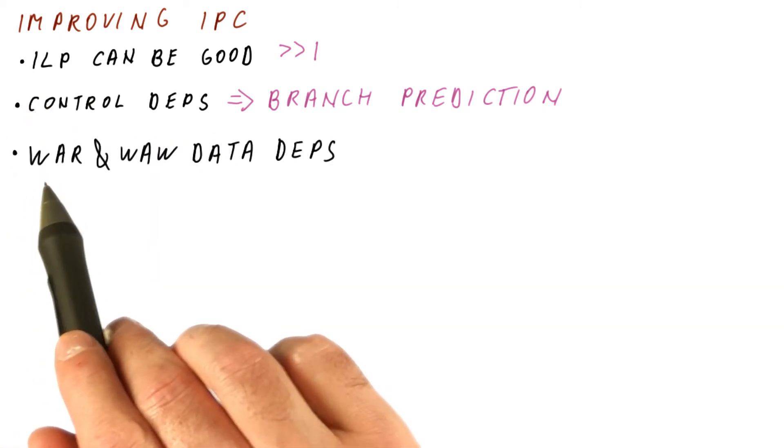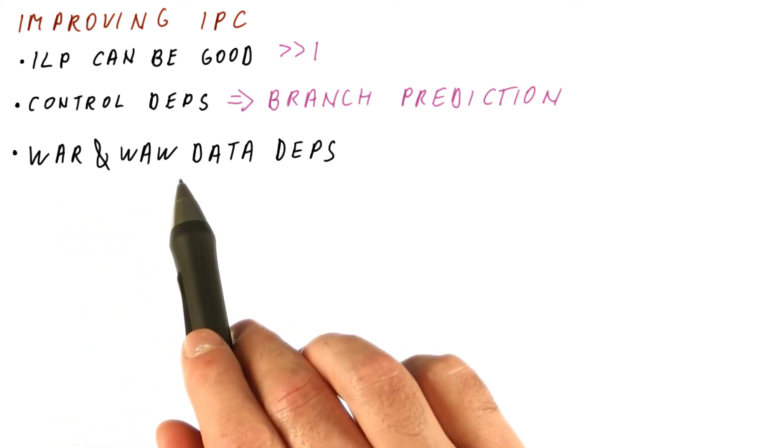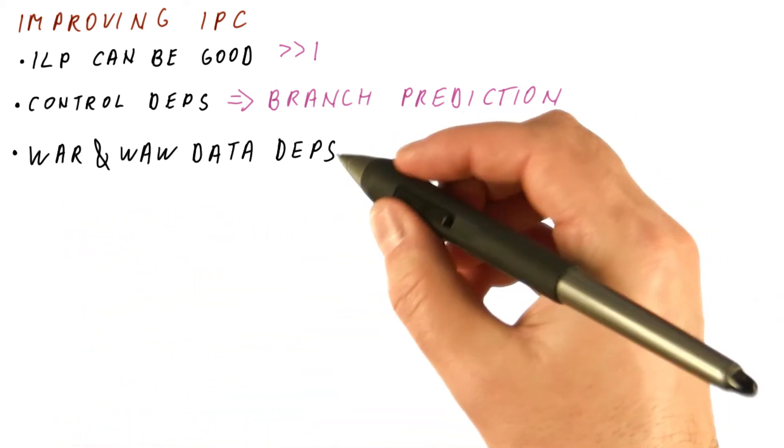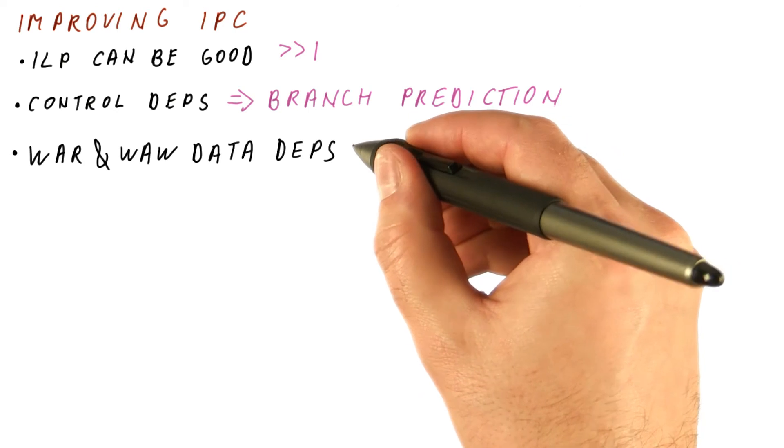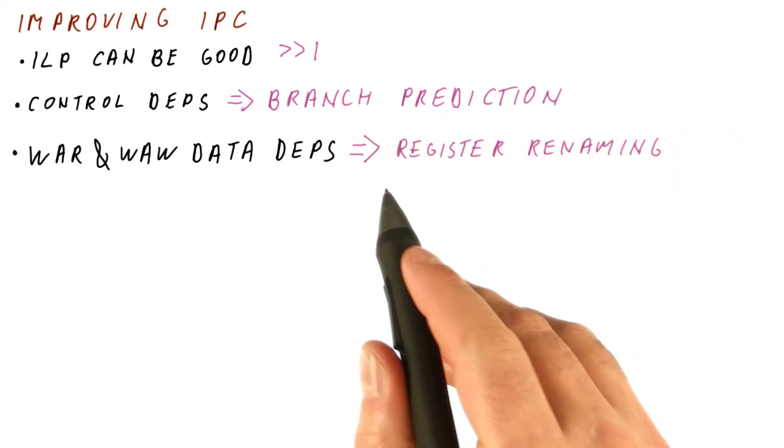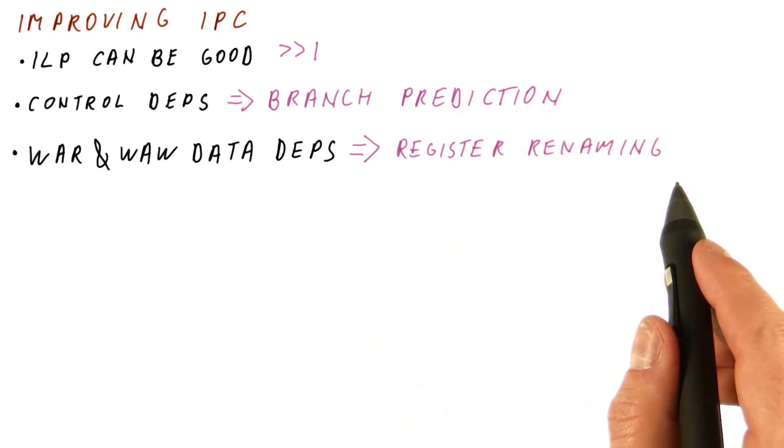Then we have to consider the write-after-write and write-after-read data dependencies, also known as false dependencies. And we have seen that a technique called register renaming can completely eliminate these dependencies so that you simply don't have them anymore in your program, at which point they're not going to be a problem for our IPC.